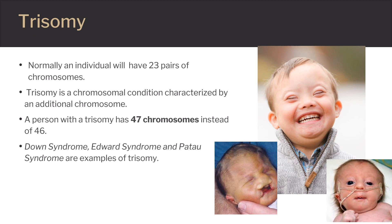Individuals with Down syndrome will experience some delay in their development and some level of learning disability. Trisomy 18, or Edwards syndrome, is characterized by low-set ears, overlapping fingers, and/or club feet, issues with cognitive development, a small skull, and malformations of the sex organs.